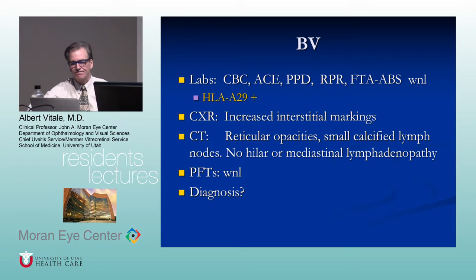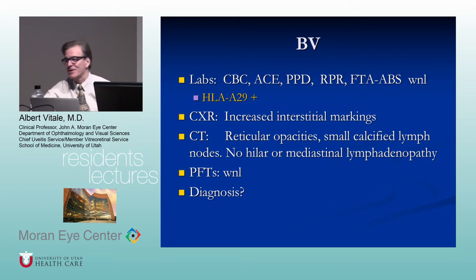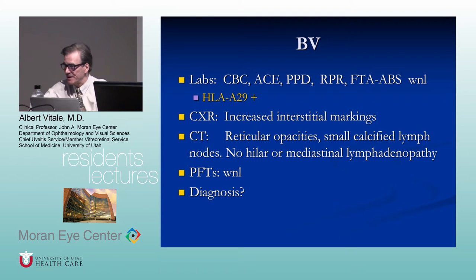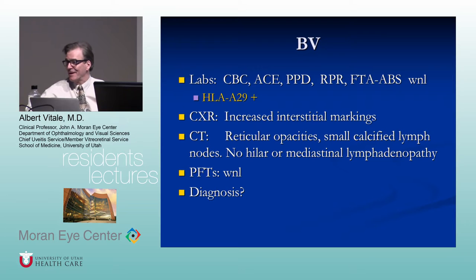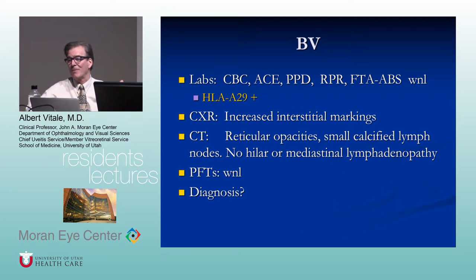The major differential diagnosis for birdshot is sarcoidosis — the absence of hilar adenopathy is important. HLA-A29 is associated with 95-98% of patients with birdshot. However, 8% of the population is positive for HLA-A29, so it's not a useful screening test — its positive predictive value would only be about 50%. A negative HLA-A29 in a patient with that picture is useful, because it's probably not birdshot — it may be sarcoid or lymphoma.